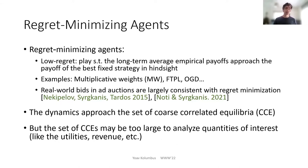We know that the dynamics of regret-minimizing agents approach the set of coarse correlated equilibria of the game. By definition, if all agents have low regrets, then the joint action distribution is close to a coarse equilibrium. But the set of coarse equilibria may be quite large in many games, including our auctions — it may be too large to analyze quantities of interest like player utilities, revenue, and social welfare. To analyze these quantities, we need to look deeper into the dynamics.